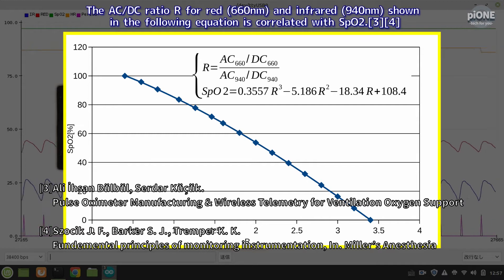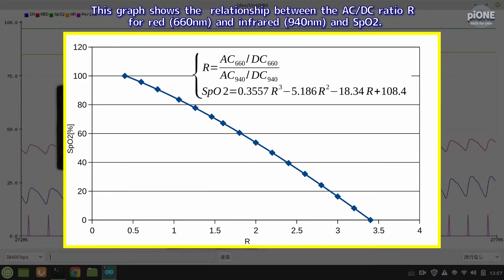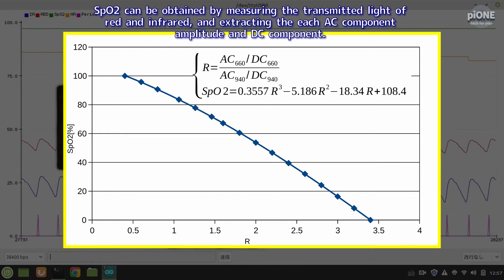shown in the following equation is correlated with SPO2. This graph shows the relationship between the AC-DC ratio for red, 660 nanometers, and infrared, 940 nanometers, and SPO2. SPO2 can be obtained by measuring the transmitted light of red and infrared, and extracting each AC component amplitude and DC component.